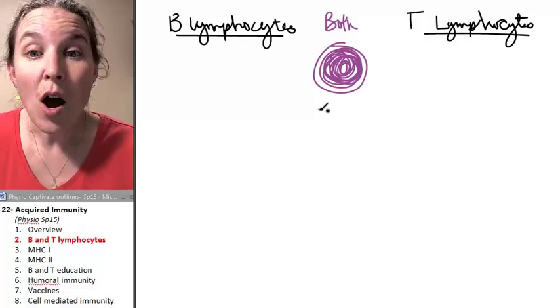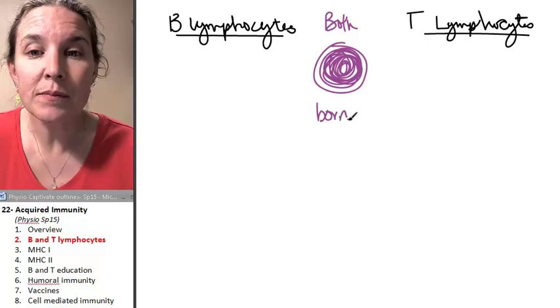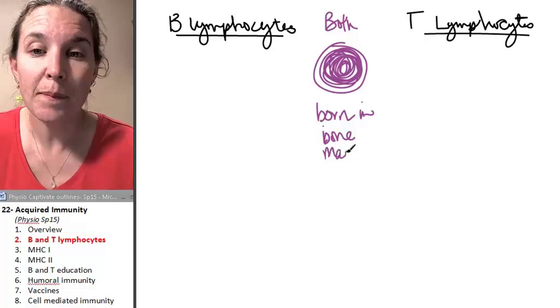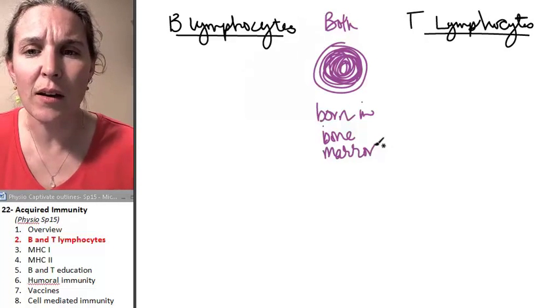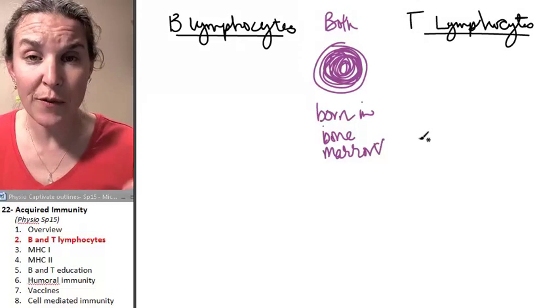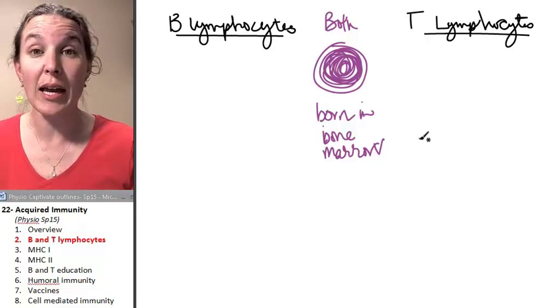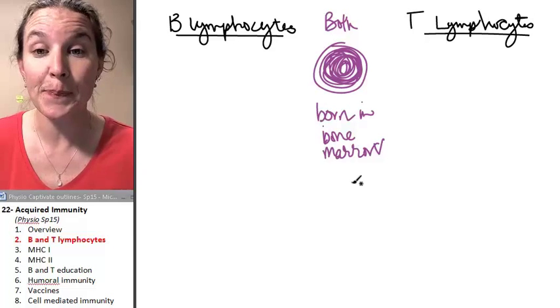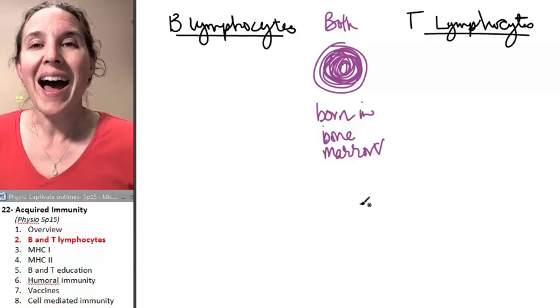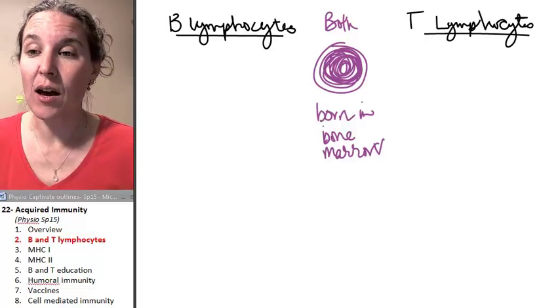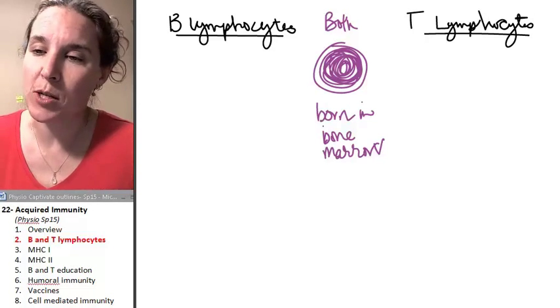Both of them are born in the bone marrow. We knew that our lymphocytes were born in the bone marrow because we talked about that when we were looking at blood clotting and platelets. After that, both go to school. They mature.